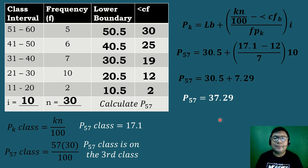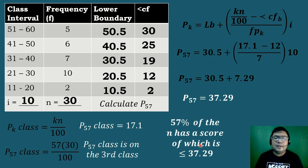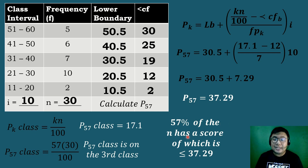So if we interpret this: 57 percent of the total frequency has a score which is less than or equal to 37.29.